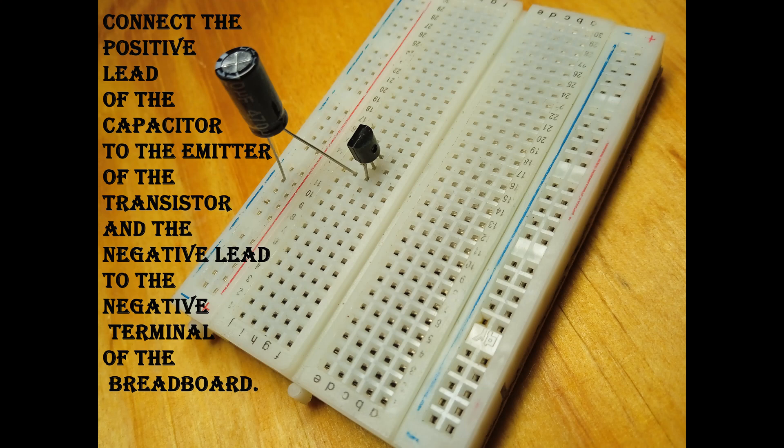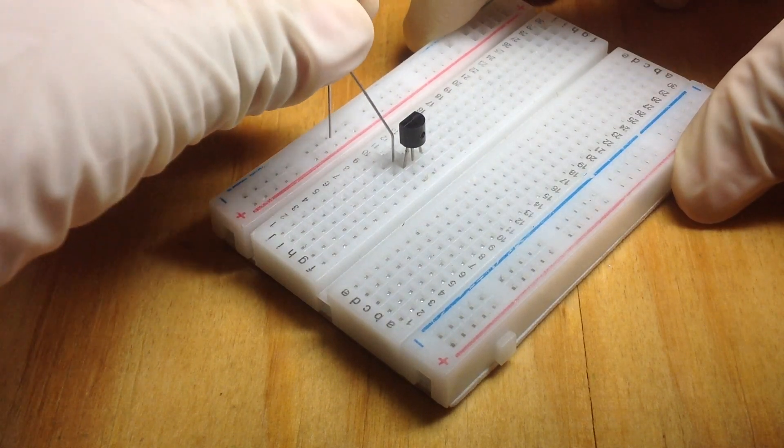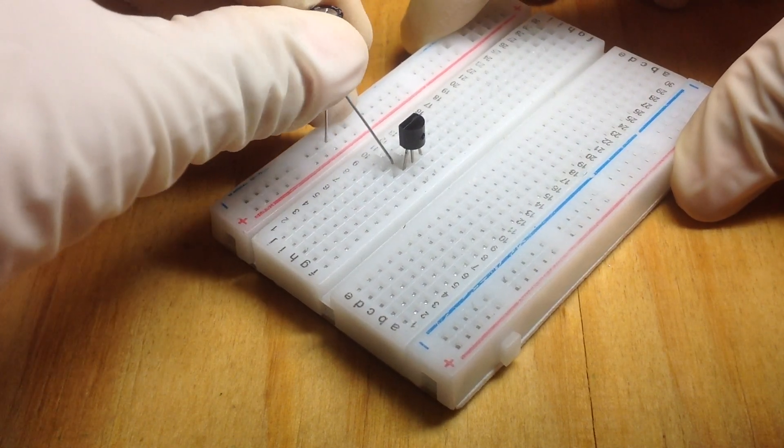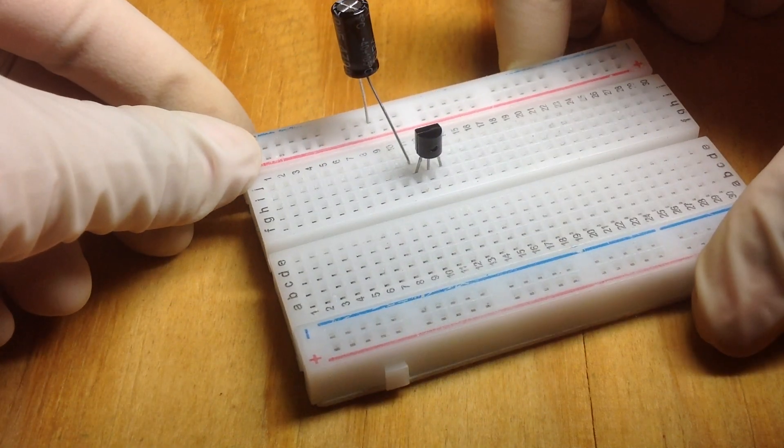Get the 470mF capacitor and connect the positive lead to the emitter of the transistor and the negative lead into the negative terminal of the breadboard.